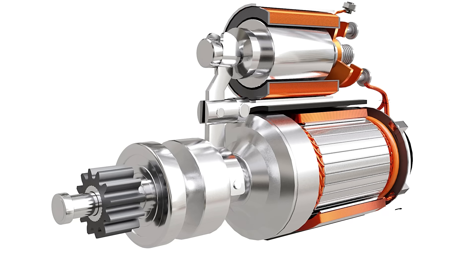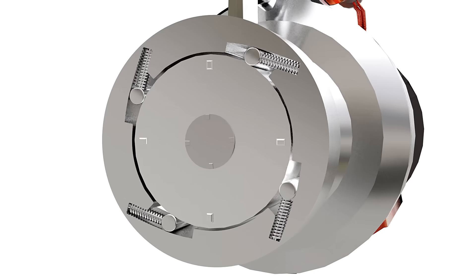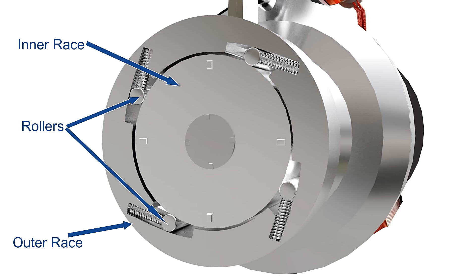The one-way clutch has a set of rollers installed between the outer and inner races. When the outer race is rotated by the motor, the rollers get trapped and transfer power to the pinion.